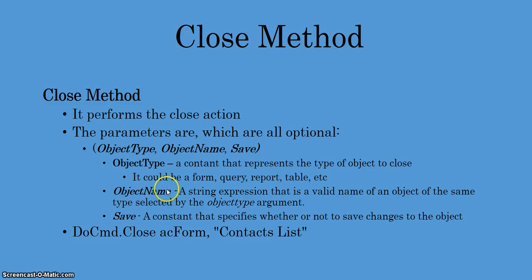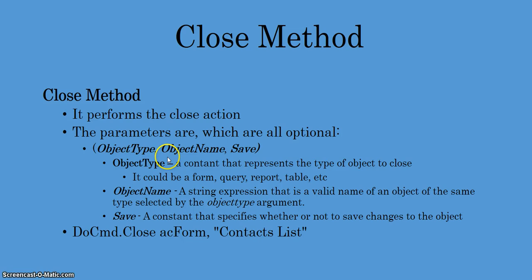The object name parameter is a string expression that represents a valid name of an object of the same type selected by the object type argument. So if it's a form you're trying to close, the string expression must match the object type you specify — the object type must represent a form object. The last parameter is save, which is also optional. It's a constant value that specifies whether or not you want to save changes to the object after you close it.